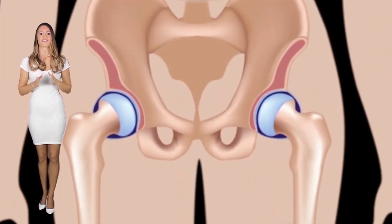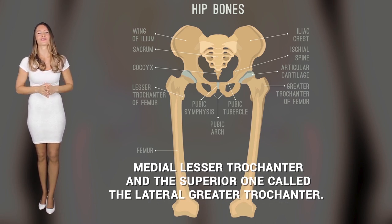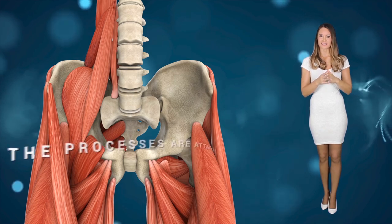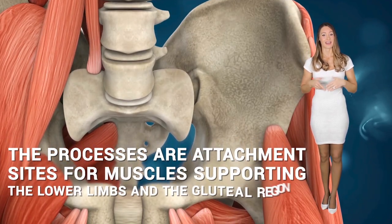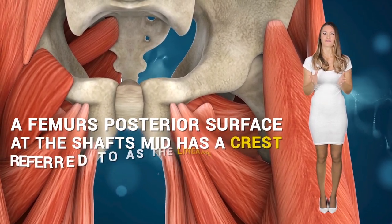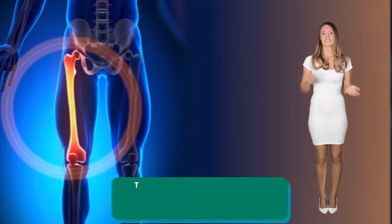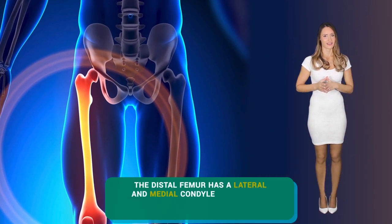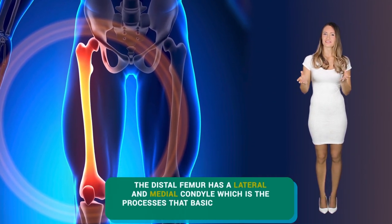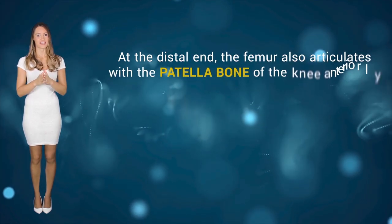Inferior to the femur's head, there is a neck and processes, with the inferior one called the medial lesser trochanter, and the superior one called the lateral greater trochanter. The processes are attachment sites for muscles supporting the lower limbs and the gluteal region. A femur's posterior surface at the shaft's mid has a crest referred to as the linea aspera, which provides an attachment site for thigh muscles. The distal femur has a lateral and medial condyle, which is the process that basically articulates with the tibia bone of the leg.